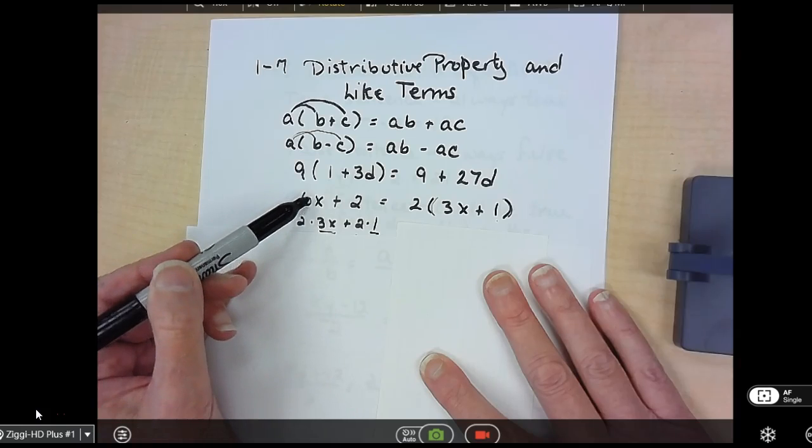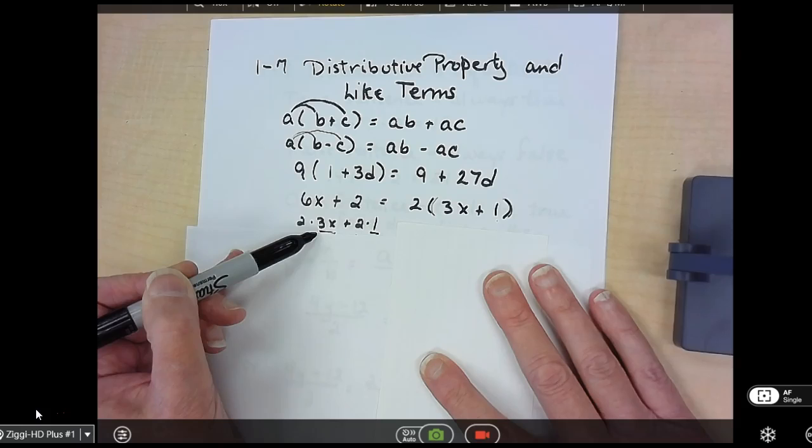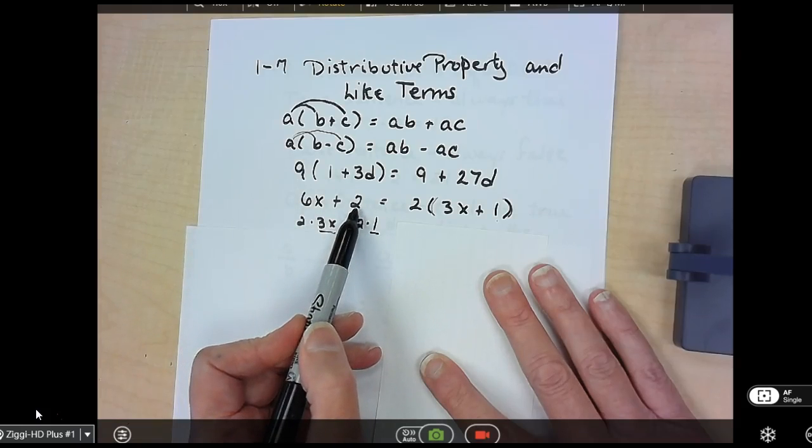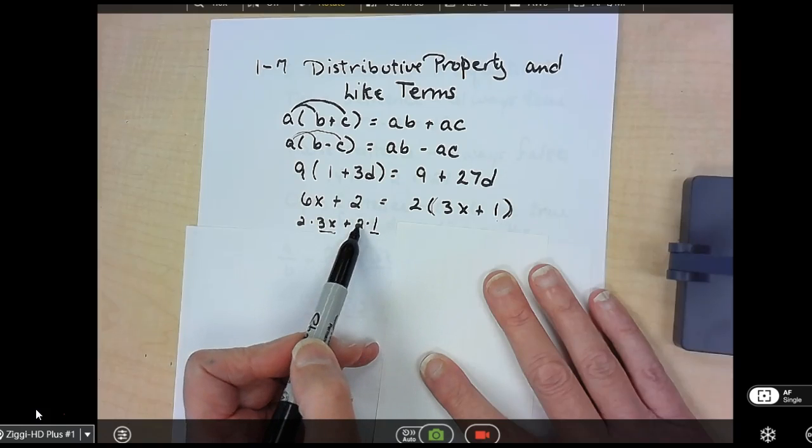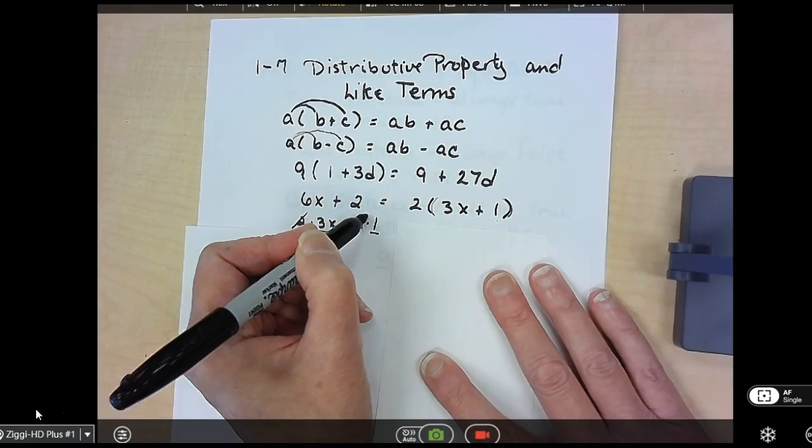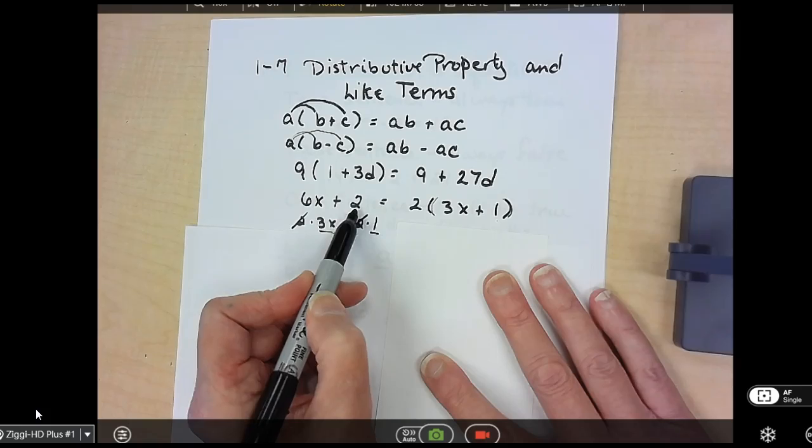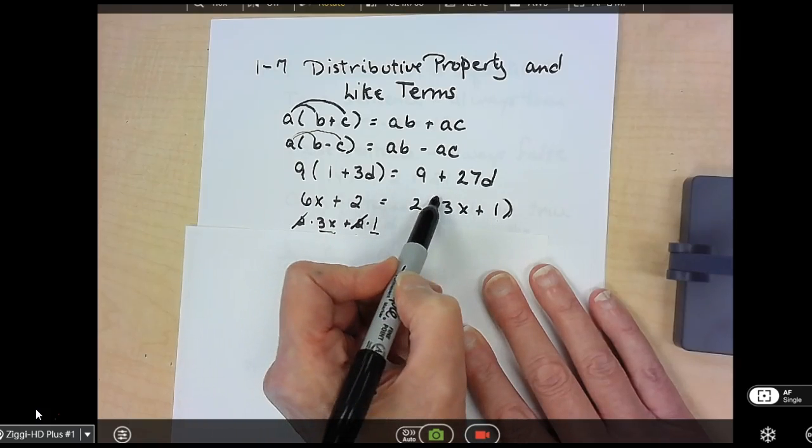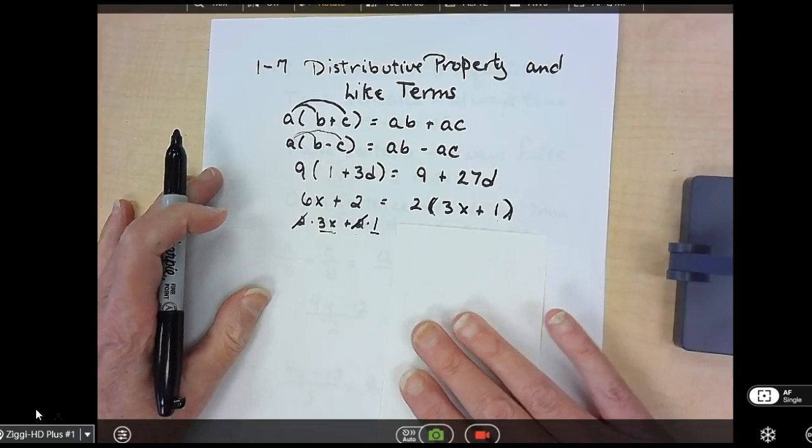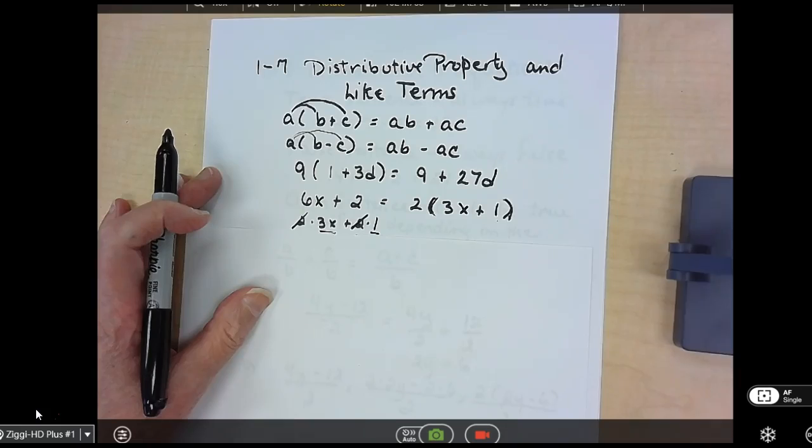So look at your terms, factor them, write down what multiplies to give you the number. If there's a whole number, the only multiple is 1. So write it down so that when you take away the 2, you can see what is left. If you start with 2 terms, you have to end up with 2 terms inside your parentheses. You cannot end with 1. So you'd end up with 2 times the quantity 3X plus 1.